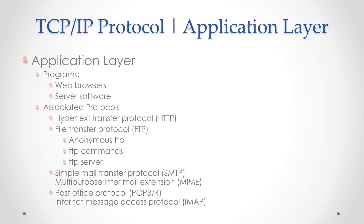Let's discuss POP3 — Post Office Protocol version 3 or 4 — and IMAP, Internet Message Access Protocol. These are protocols used when receiving emails from the email server and are known as pull protocols. The client periodically connects to a server, checks for, and downloads new emails from the server. The connection is then closed, and this process is repeated to ensure the client is updated.